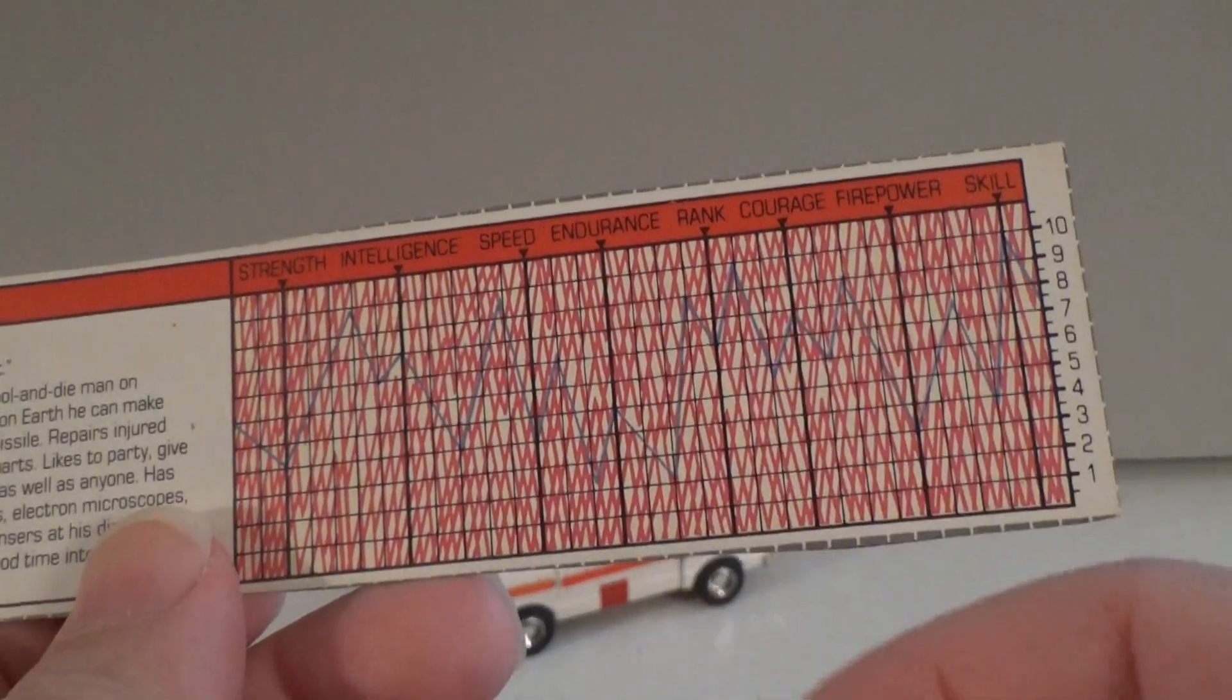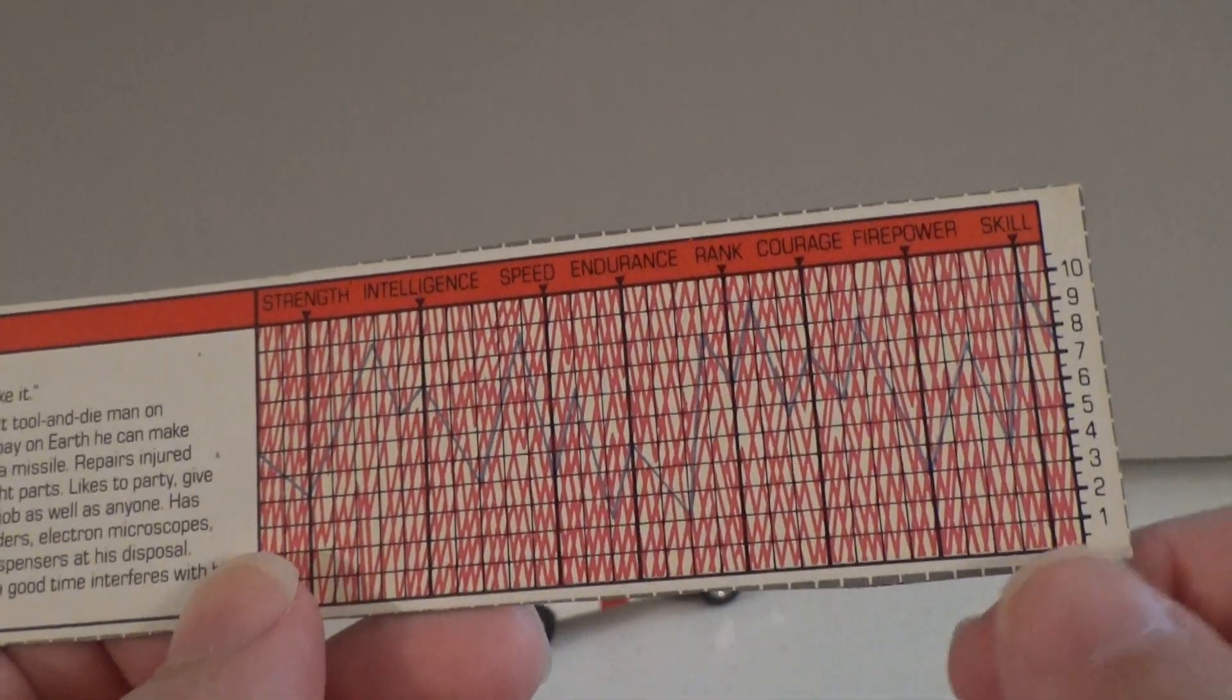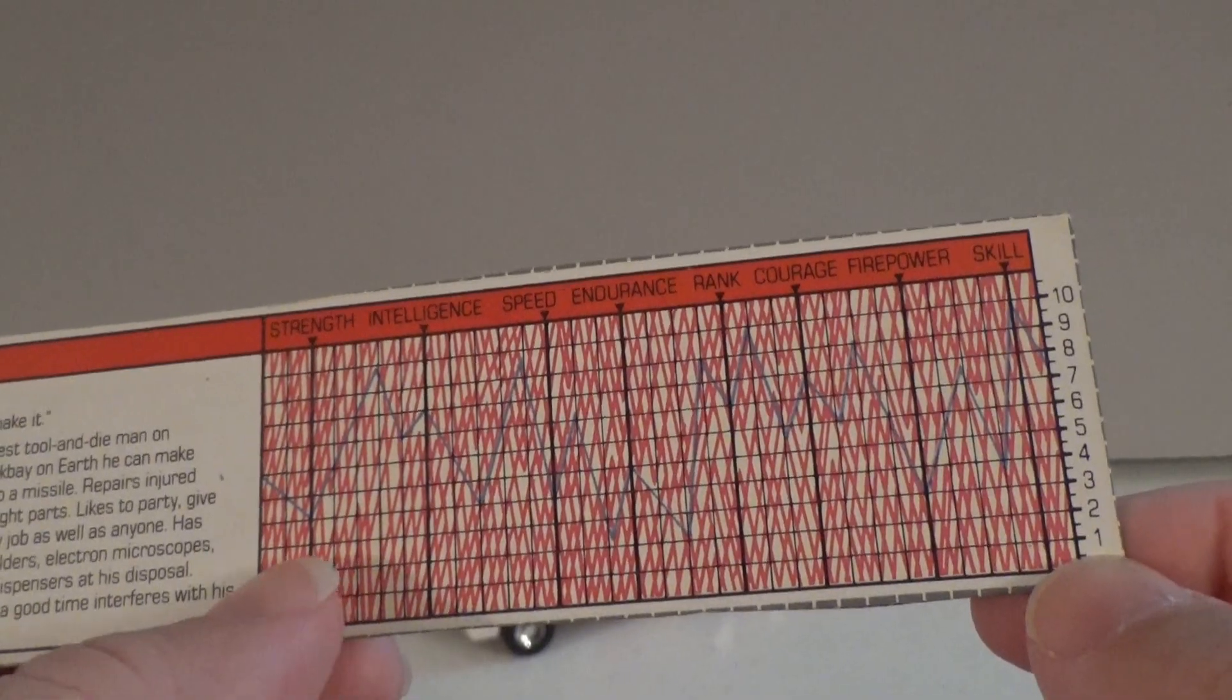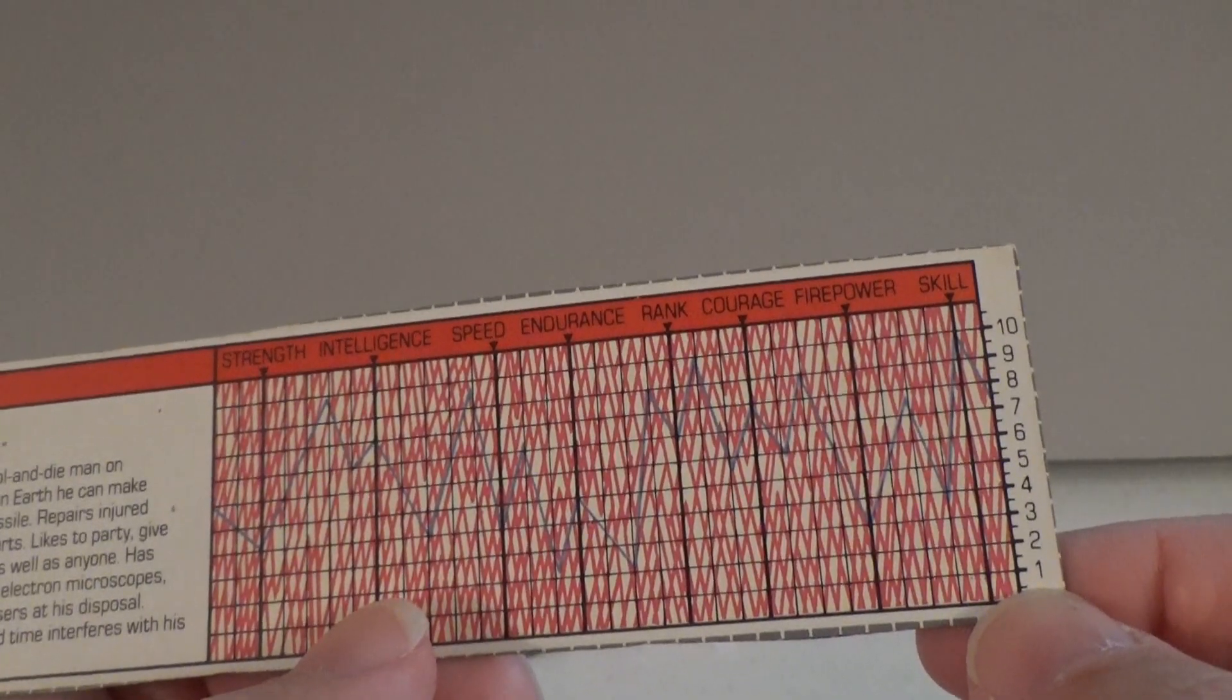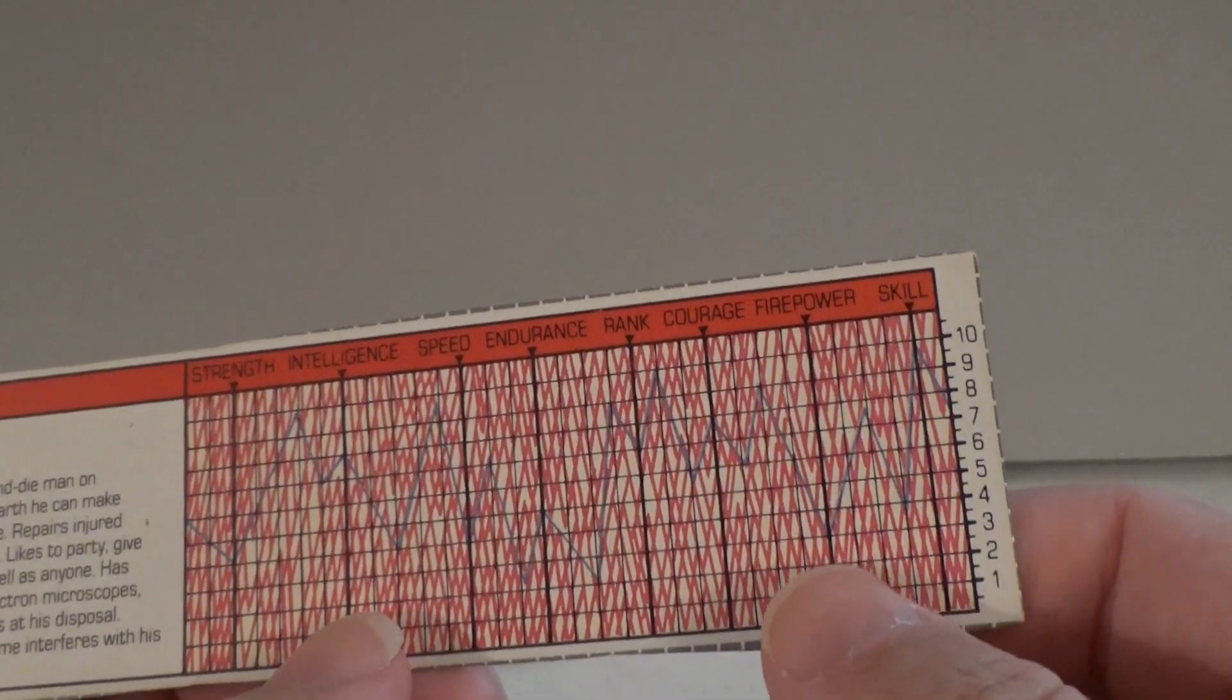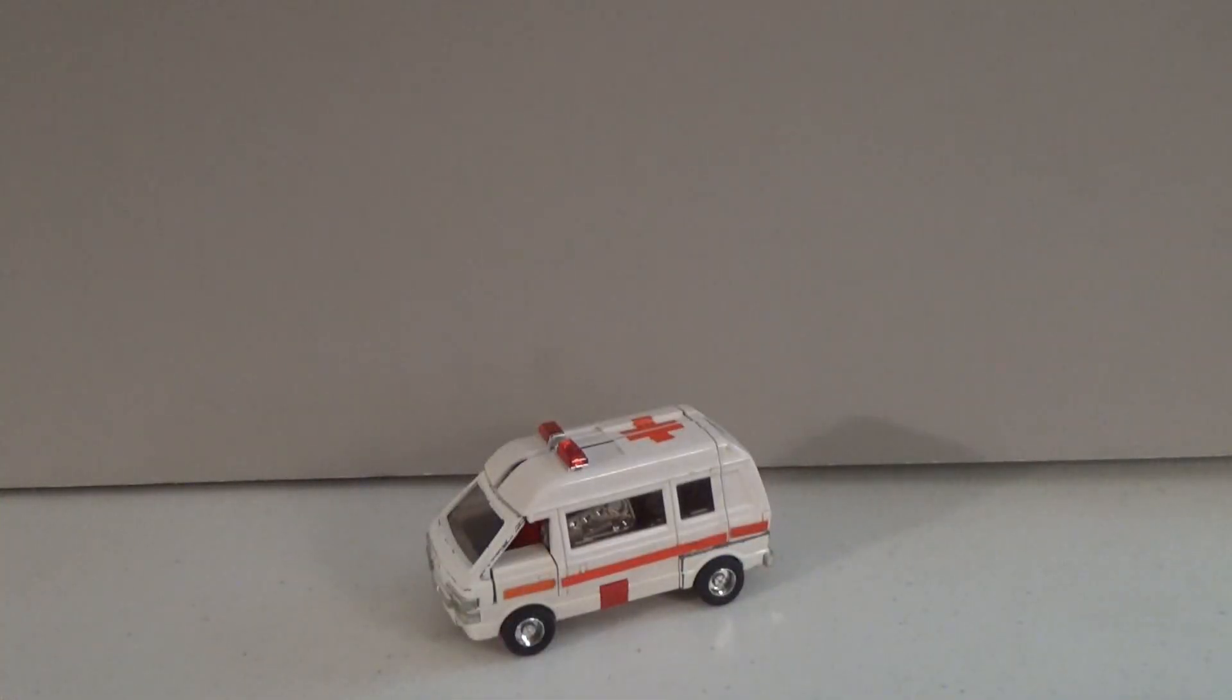At any rate, we'll take a look here at his tech spec grid. Normally, you would need a red decoder to lay over it so you can see the bars on it, but I can see them pretty well. Probably not translating well on the camera, but I can see them. It gives his strength as 4, his intelligence is 8, his speed is 4. I would have expected better out of an ambulance. His endurance is 5, his rank is 7, his courage is 8, his firepower is 3, not surprising, and his skill is 10. So Ratchet is indeed good at his job, but he is a little slow and weak. But then again, nobody's perfect.